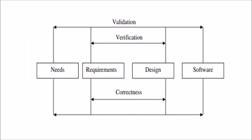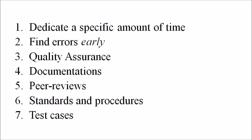Then there arises a question: what are the keys to developing and maintaining high-quality software? The keys consist of following these seven guidelines. To create software that is of high quality, we should dedicate a specific amount of time for developers to read business requirement documentation. Secondly, find errors early in the development phase.